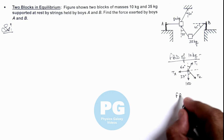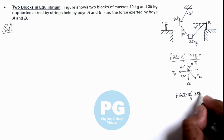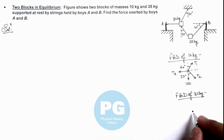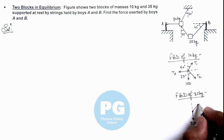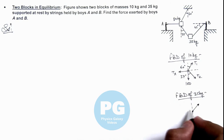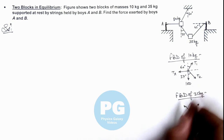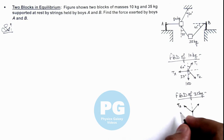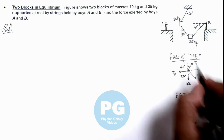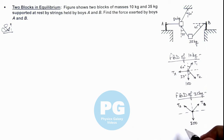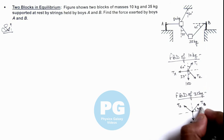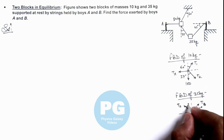Similarly, if we draw the free body diagram of the 35 kg block, we can see it is experiencing 35g or 350 newtons in the downward direction as its weight. In this direction it is experiencing a tension applied by boy B, and the string connected to the 10 kg block carries tension T2. This string is ideal. Here we are given that this angle is 45 degrees and this angle is 37 degrees.